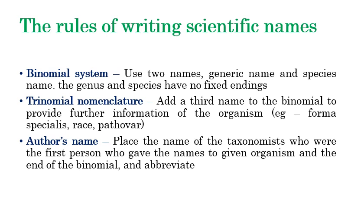The trinomial nomenclature adds a third name to provide further information. The name consists of genus name, species name, and a third name such as forma specialis, race, or pathovar — to provide extra information about the particular pathogen. The author name refers to the taxonomist involved in the discovery or naming of the fungus; this name is added at the end of the binomial or trinomial nomenclature.